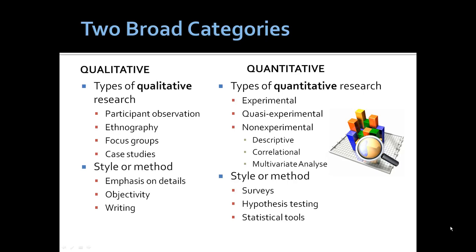In qualitative methods, the emphasis is placed on systematic organization of details and on objectivity in collecting and organizing the data or information about people and groups themselves and in their behavior. Good and lively writing is especially important in qualitative research, since the investigator must narrate an interesting and factually accurate story.